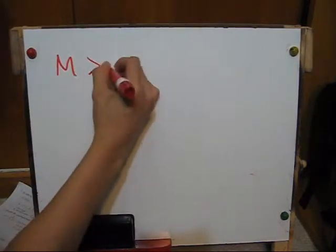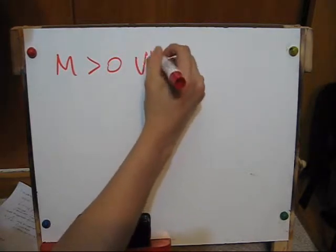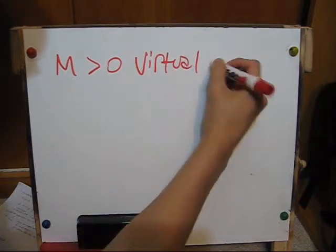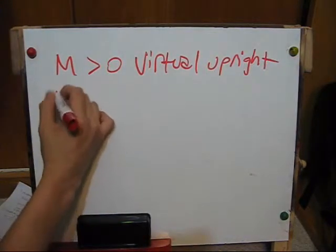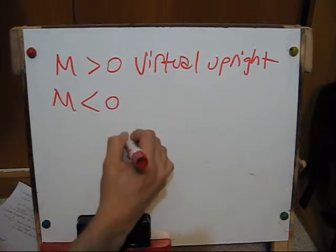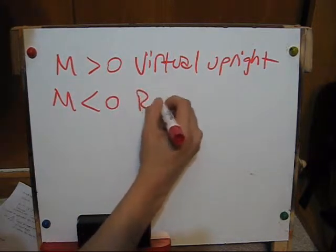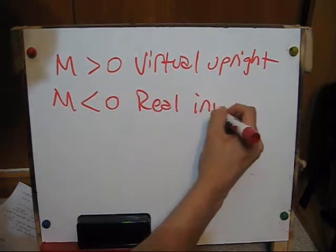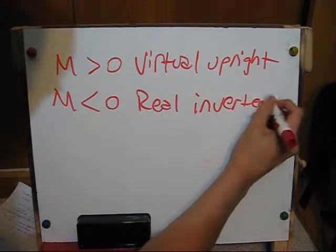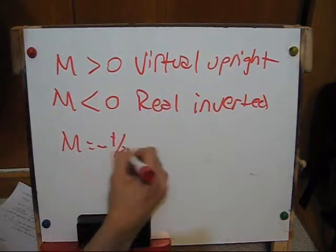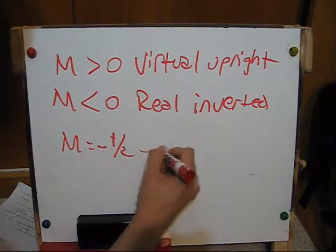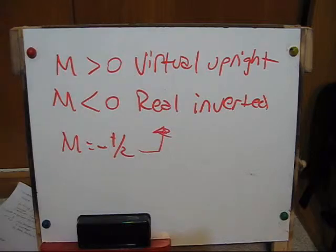A note about magnification: if it's positive, then the image is virtual and upright. But if the magnification is negative, then the image is real and inverted. So if m equals minus one-half, then the image is real and inverted.